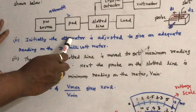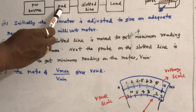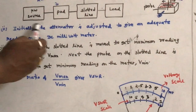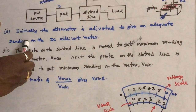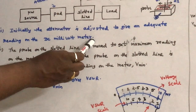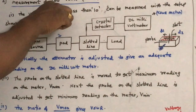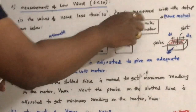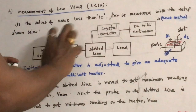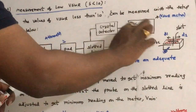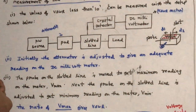Initially, the attenuator — which is the pad — is adjusted to give an adequate reading on the DC millivoltmeter. The variable attenuator knob is adjusted such that a good reading appears on the DC millivoltmeter, ensuring adequate deflection before taking measurements.